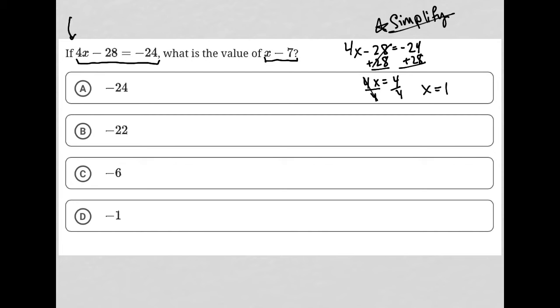Thankfully, I don't see 1 as an option here, because a lot of students make a mistake there and just think that after doing this work, they must be done. But the question asks very obviously and very clearly for x minus 7. So what I really want is 1 minus 7, which is negative 6, and therefore choice C is the correct answer.